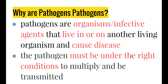So what are pathogens and why are they referred to by this term? The definition of a pathogen is an organism or infective agent that lives in or on another living organism and causes disease. We need to get into the habit of referring to infectious diseases as those that are caused by pathogens, rather than simply as diseases that can be passed from one individual to another. The key to an infectious disease is that it is one caused by a pathogen.